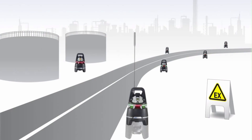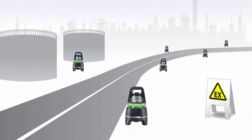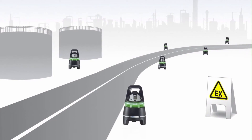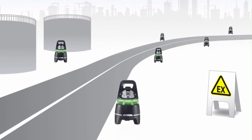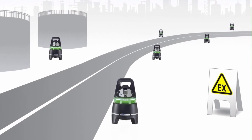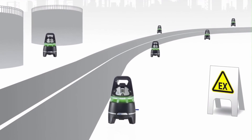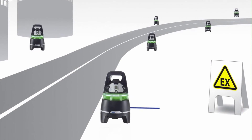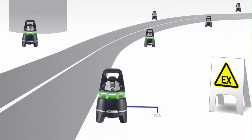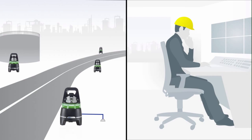You can also integrate X-Zones into your existing gas detection system. Every X-Zone has a Modbus interface. Simply connect the device via Modbus and the measurement data from all area monitors will be transmitted in real time to your control center.